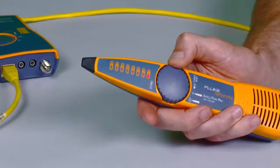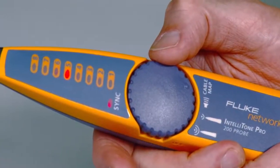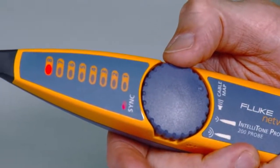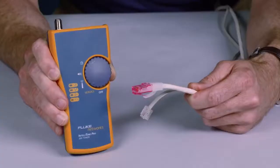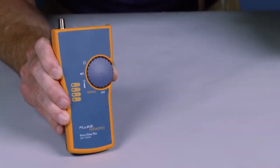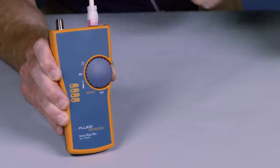The toner and probe feature a thumb wheel ergonomic design and status indicators give easy-to-read feedback. The mystery of identifying cable services becomes history. Know if it's a data, telco, or dead jack instantly.